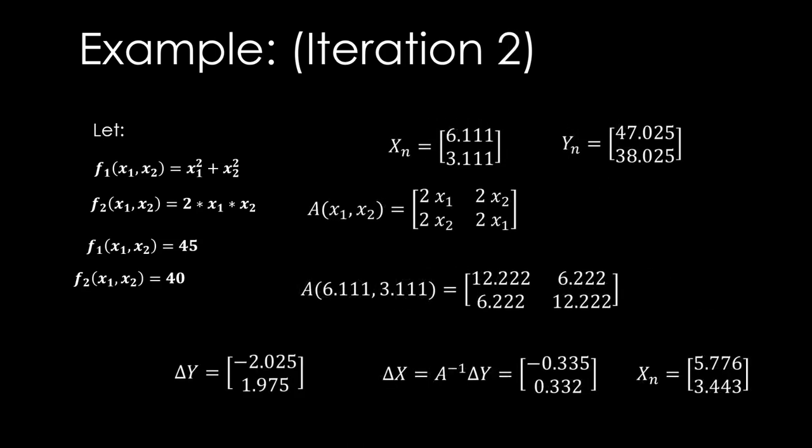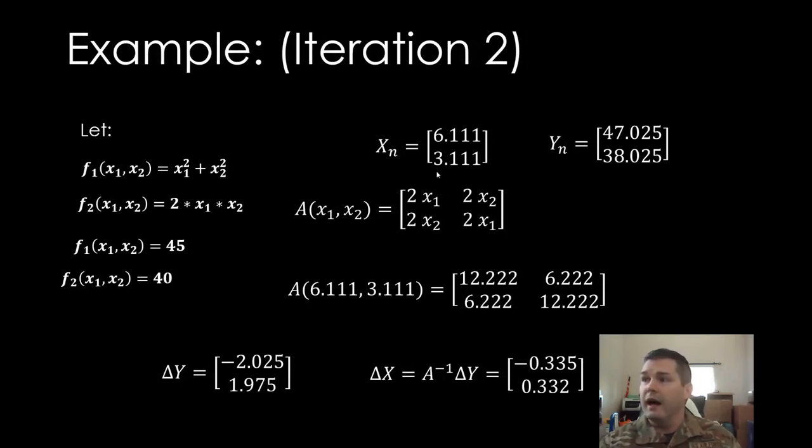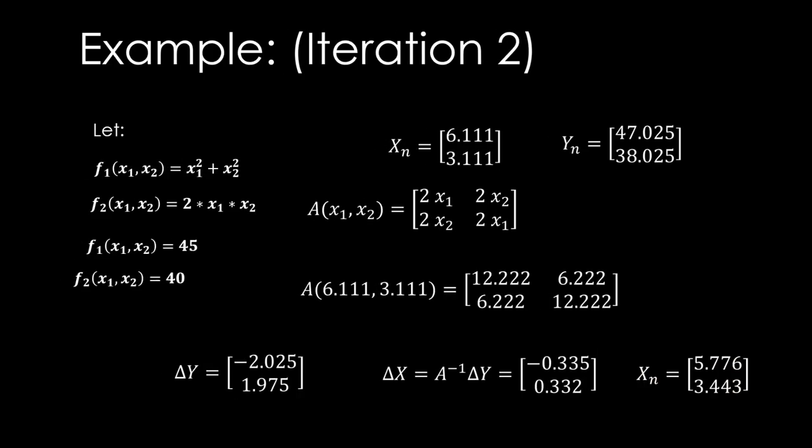Now I literally just repeat the process. I now have a new nominal, 6.1 and 3.1. I evaluate my Y's, I get 47 and 38. Once again, my Jacobian as a matrix of functions hasn't changed, but I'm linearizing about a different point, so I need to evaluate that Jacobian at my new nominal point. I get 12.2, 6.2, 6.2, and 12.2. Now my delta Y's have changed. My f1 needs to get smaller by 2, and my f2 needs to get larger by 2. When I plug all of those in, I get that my x1 needs to get smaller by about a third, my x2 needs to get bigger by about a third. So now I'm at 5.7 and 3.4.